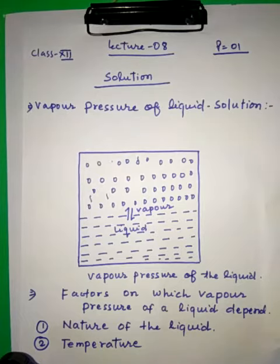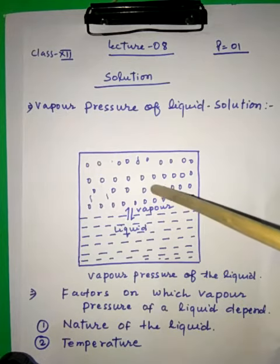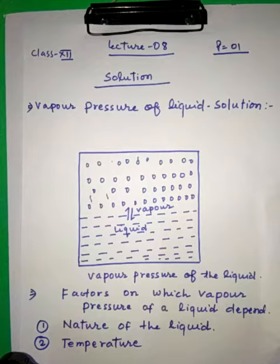First of all, we know about vapor pressure. Here we see the figure. In this figure we see that liquid will change into vapor state. The pressure exerted by the vapor is called vapor pressure.